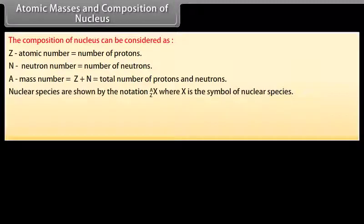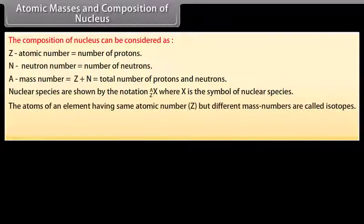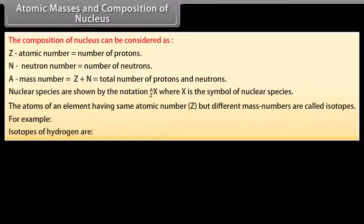Nuclear species are shown by the notation where X is the symbol of nuclear species. The atoms of an element having same atomic number, that is Z, but different mass numbers are called isotopes. For example, isotopes of hydrogen are.